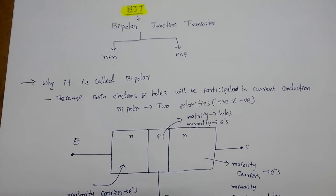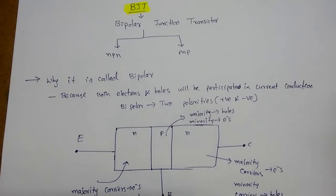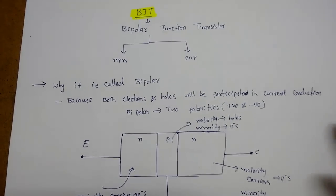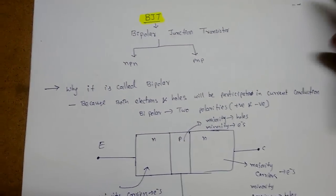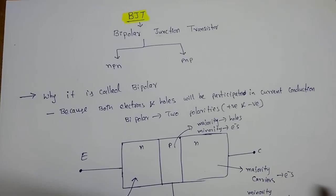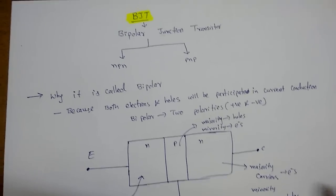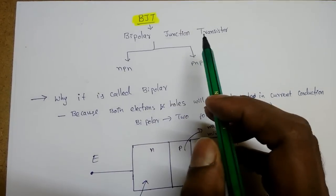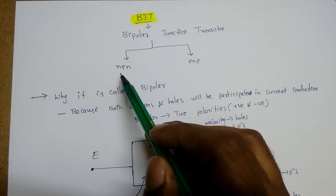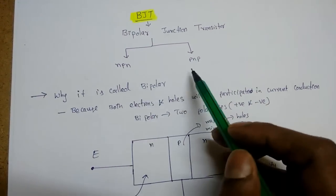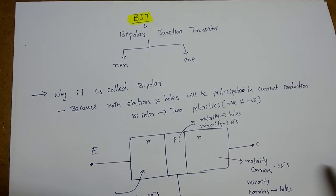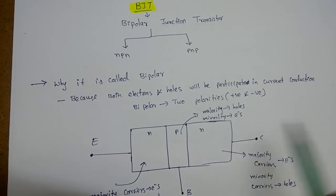Good evening everyone. In this lecture we are going to deal with the bipolar junction transistor — its operation, some applications, etc. Bipolar junction transistors are basically of two types: NPN and PNP transistors.